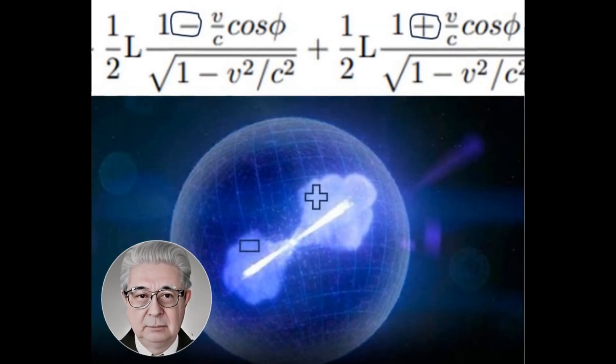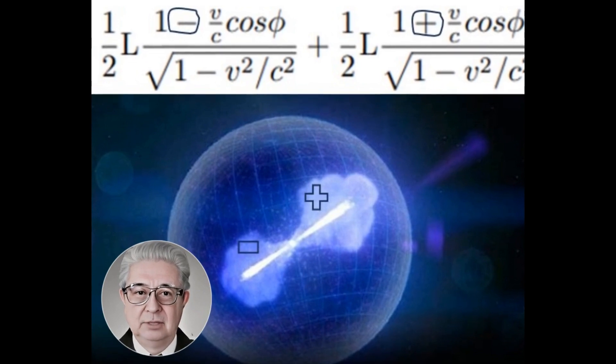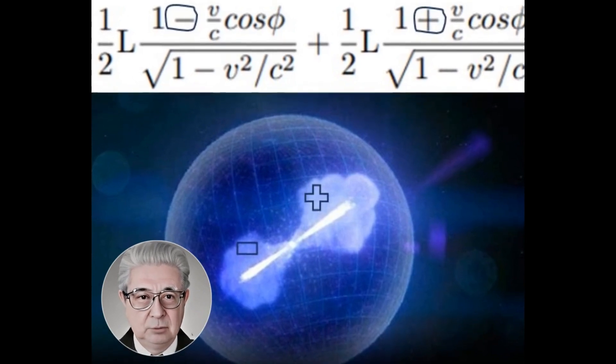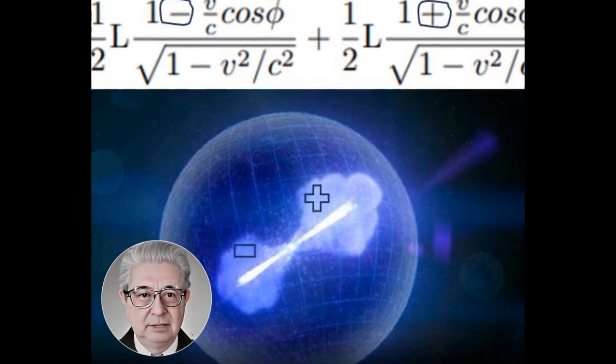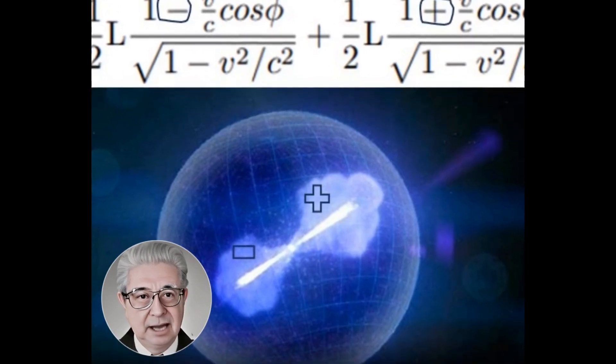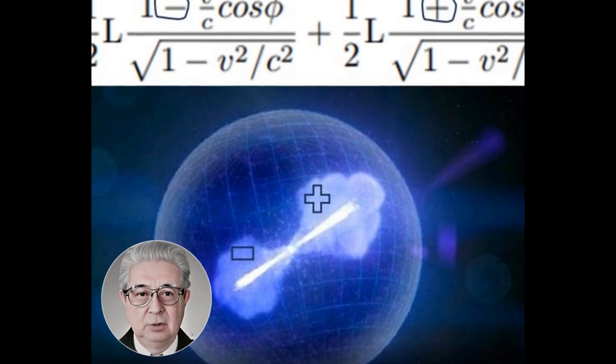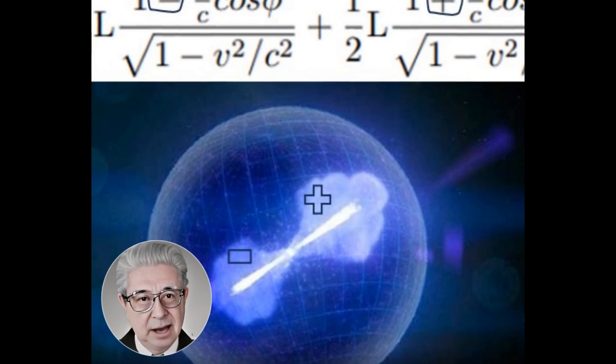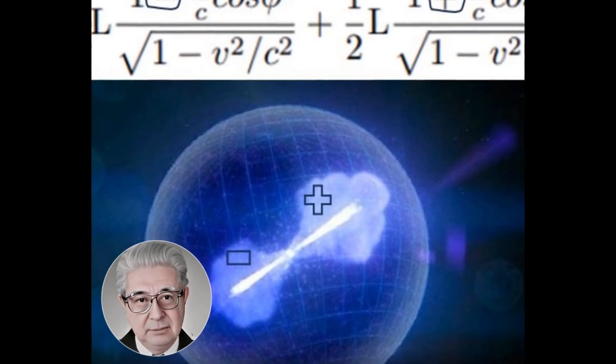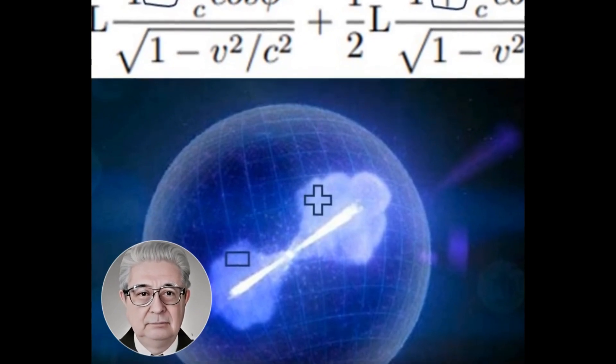These terms have opposite signs because they represent the direction in which the second coordinate system moves with respect to the first coordinate system. The first term with the negative sign represents the energy of the light emitted in the direction in which the second coordinate system moves, while the second term with the positive sign represents the energy of the light emitted in the opposite direction.